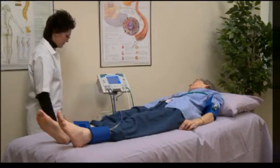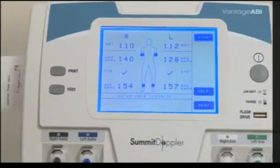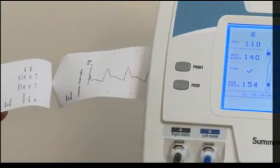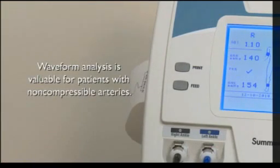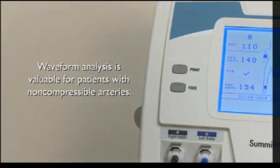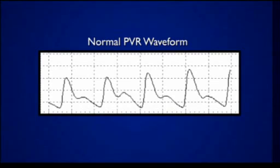The Vantage ABI can automatically obtain ankle waveforms using the pulse volume recording, or PVR, with the cuffs. The diagnostic value of the ABI is enhanced by the analysis of lower extremity waveforms, and waveform analysis is especially valuable for patients with non-compressible arteries. The normal PVR waveform resembles the arterial pressure pulse, with a sharp systolic upstroke and a relatively narrow, well-defined peak.